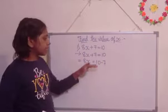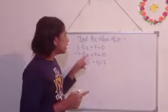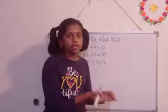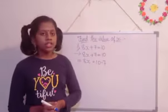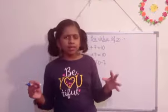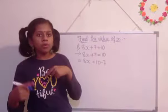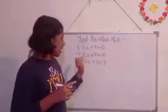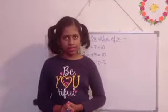Here, I wrote 10 minus 7. Why? Because here 7 has been shifted to the right side of the 10. So if any number shifts, we get the opposite side of that. So here plus 7 is there, we got minus 7. Got it?